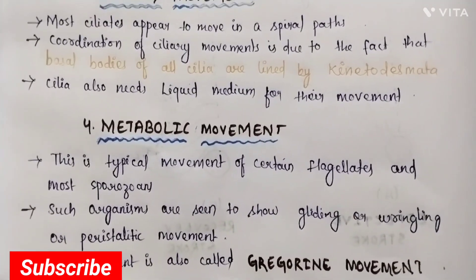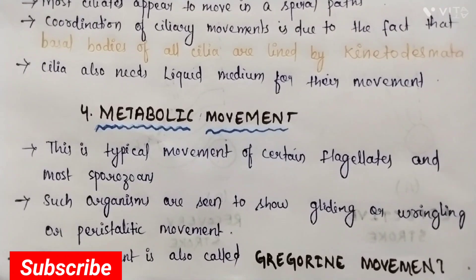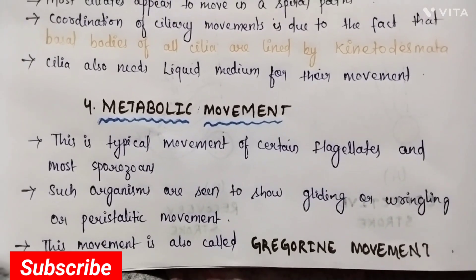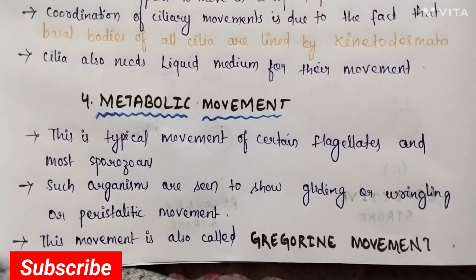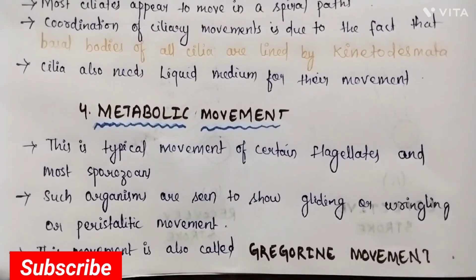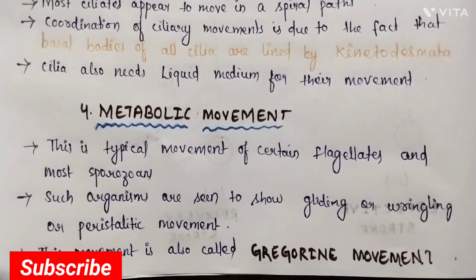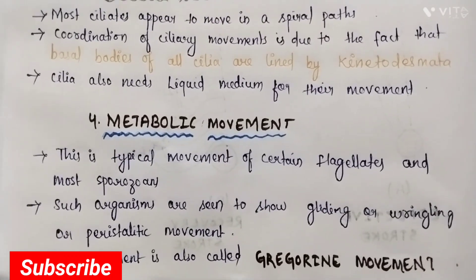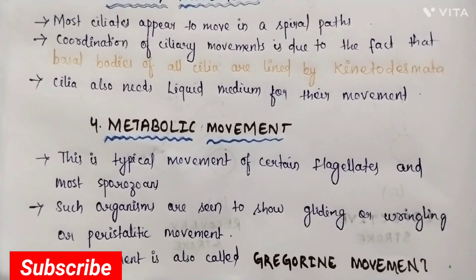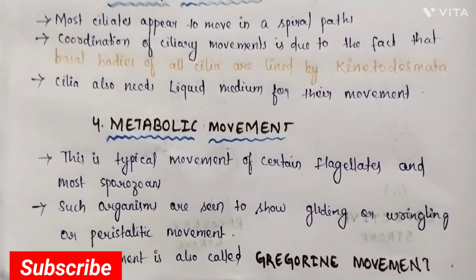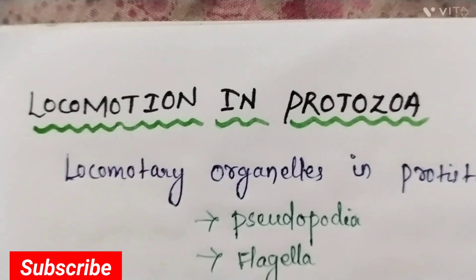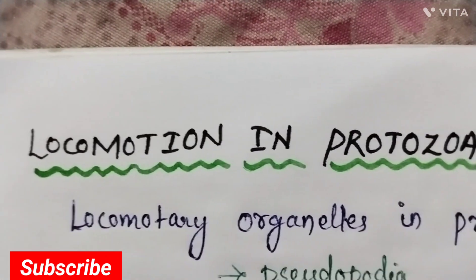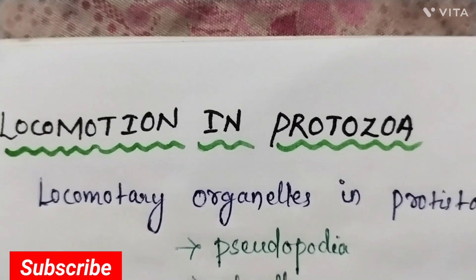Metabolic movement: this is a typical movement of certain flagellates and most gregarines. Such organisms are seen to show gliding, rolling, or peristaltic movements. This movement is also called gregorine movement. This is the way in which protozoans locomote.